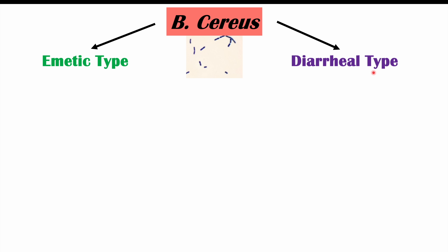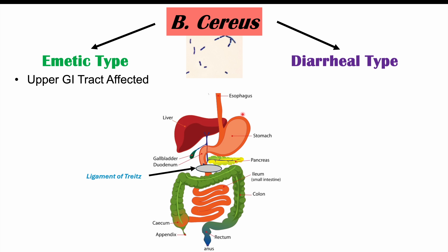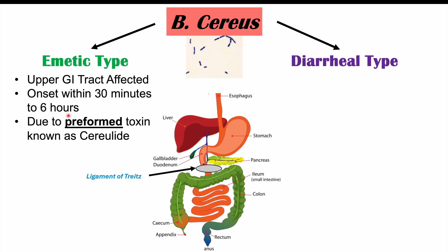Each type is going to occur with a different pathophysiology. In the emetic type, the upper gastrointestinal or GI tract is affected. The upper GI tract is anything proximal or above the ligament of Treitz, which is located in and around the duodenum, the first part of the small intestine. So the emetic type occurs mostly in the stomach and perhaps the first part of the small intestine. This type occurs more rapidly than the diarrheal type, with symptom onset in 30 minutes to six hours. The reason it can occur more quickly is because it is due to a preformed toxin known as cerealide.